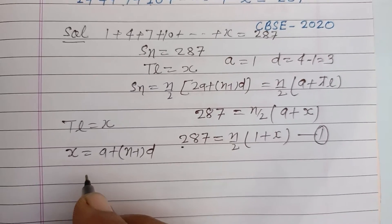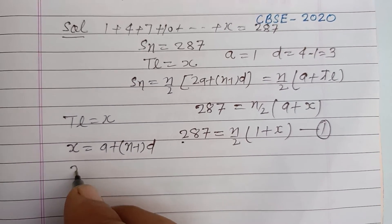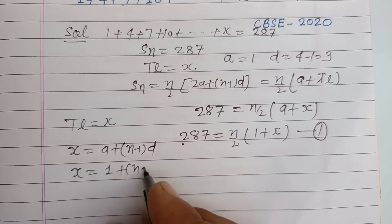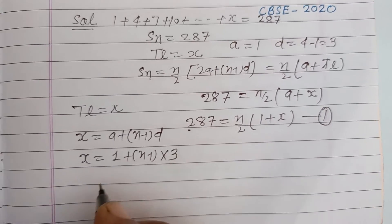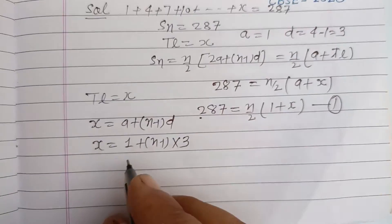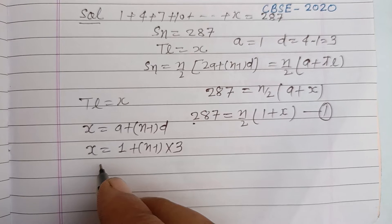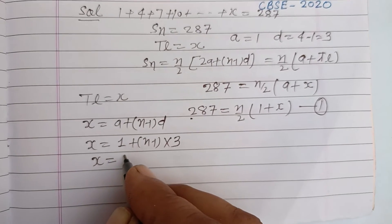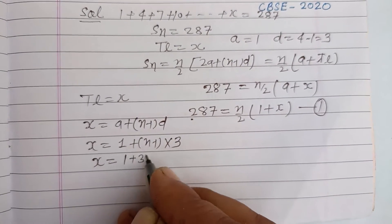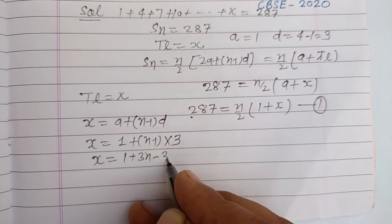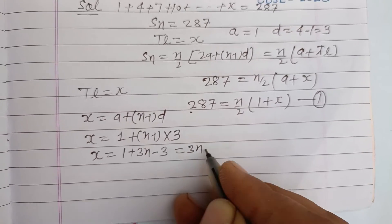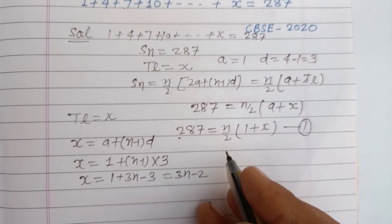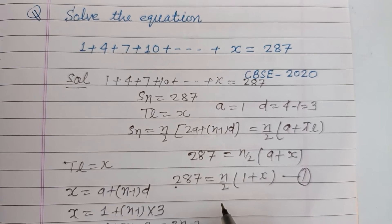From TL equal to x, we have x equals a plus (n minus 1) into d. So x equals 1 plus (n minus 1) into 3, which gives x equals 1 plus 3n minus 3, or x equals 3n minus 2.